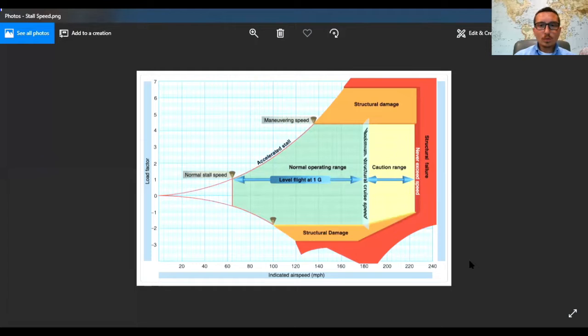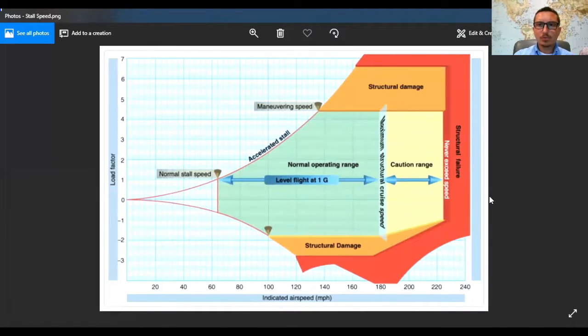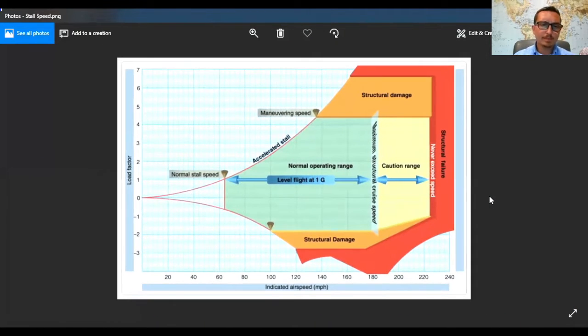Okay, so what I'm showing here is a load factor graph. Basically what the load factor is, or what these questions are going to ask you on the FAA part 107 exam, is when a plane has weight added to it or when it's making a turn. So if it's making a turn, that's going to add, making a turn essentially adds weight to the plane or has the same effect as adding weight to the plane. So that's what the load factor is.